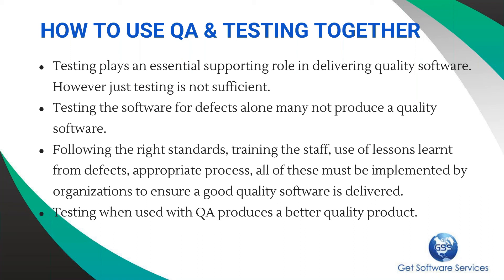So when used together, they produce a good quality product. To summarize: the main difference between quality assurance and testing is that quality assurance starts right from the beginning to ensure that the process followed during software development is the right one. Testing is when you go and test the software itself to find any possible defects which need to be corrected before the customer starts using it. That's the main difference between quality assurance and testing.